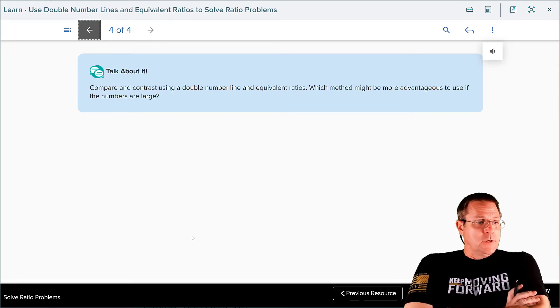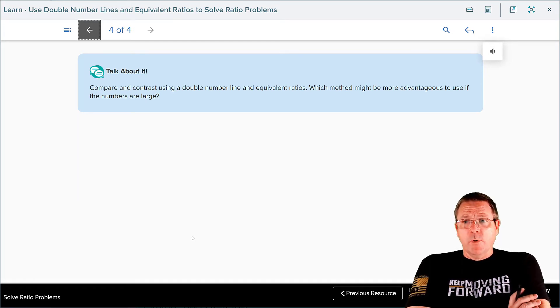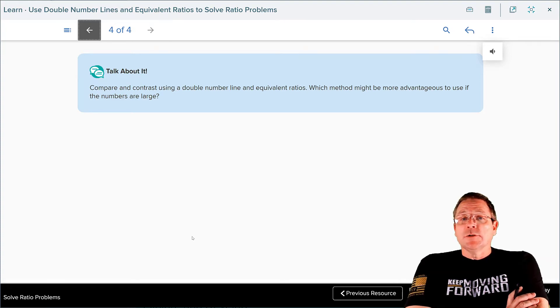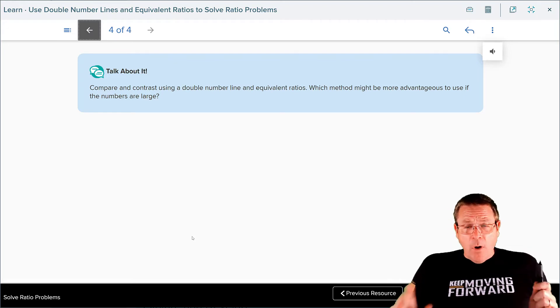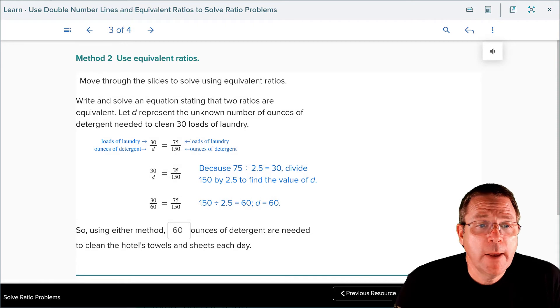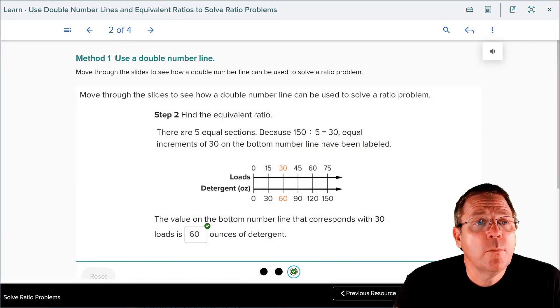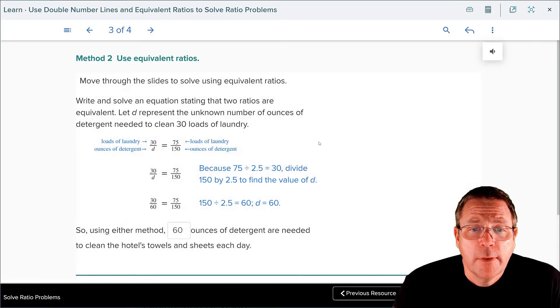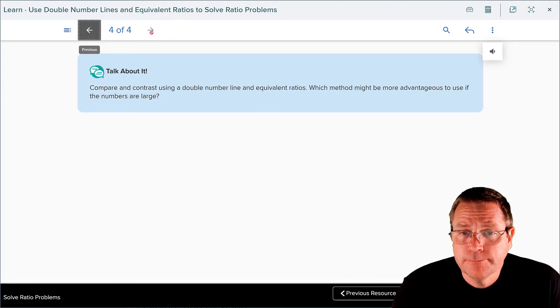For our compare and contrast section, we are going to compare and contrast using a double number line and equivalent ratios. Which method might be more advantageous to use if numbers are large? Well, if numbers are large, I'm all about doing the method 3. Because in method 3 you can do a little bit of division, a little bit more division, boom, you're done. In method 1, the double number line, you had to do a whole lot of artwork. You had to figure out how many even sections it divided into. To me, although it looks like less work, I think it's a lot more work than doing this right here. But you may have a different opinion and that's entirely up to you.